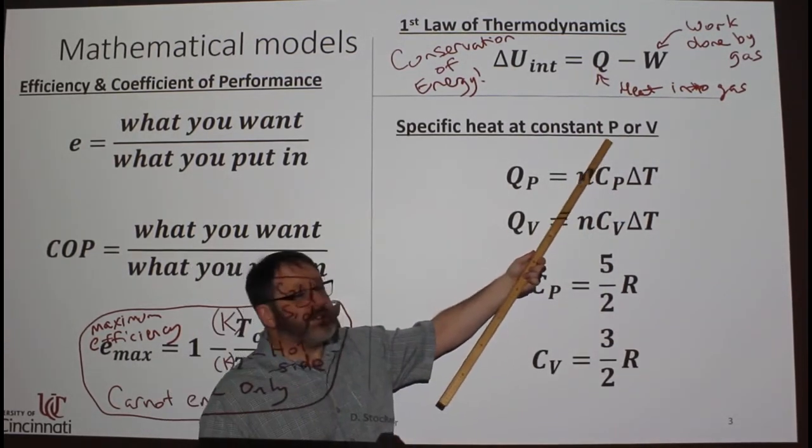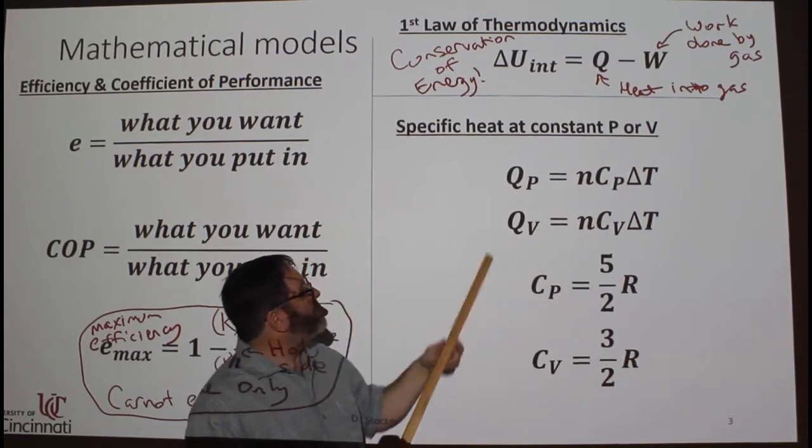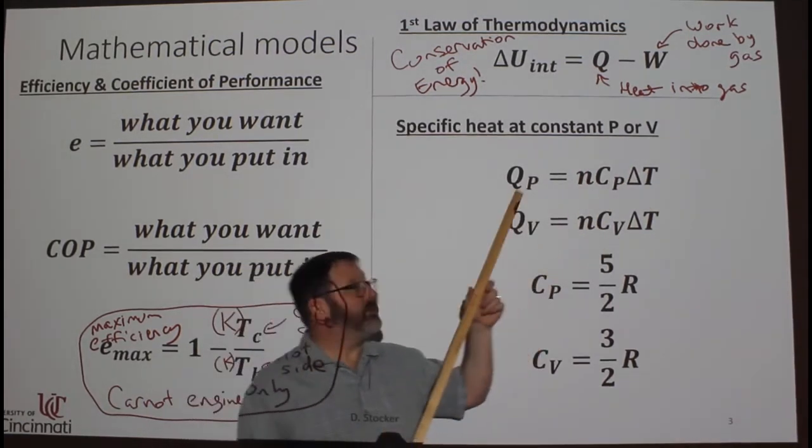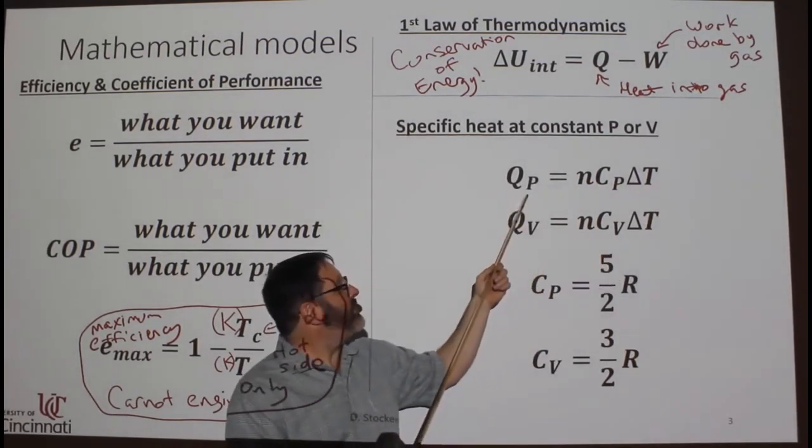Now, specific heat at constant pressure or constant volume, these are for ideal gases. This looks a lot like Q equals MC delta T, except here, again, we have Q.